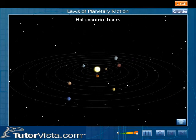Heliocentric Theory: According to the heliocentric theory put forth by the Polish astronomer Nicholas Copernicus, the sun is at the center of the universe and the planets revolve around it in their respective orbits.